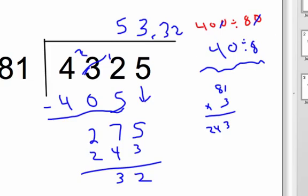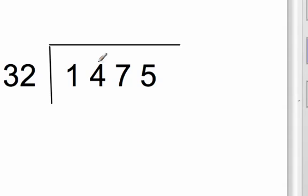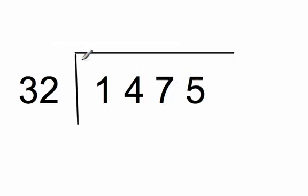Let's try another one. So I have 32 going into 1,475. Well, I'm going to round this to 30. Makes sense. Again, we want to get into a number that's easy to work with. And I know 30 doesn't go into 1, and I know it doesn't go into 14, but it will go into 147.